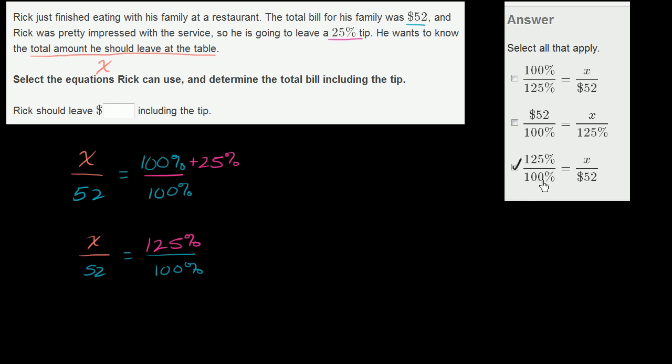And once again, this makes sense. The ratio between what he's going to pay with the tip to 100%, or the percentage that he's going to pay if you include the tip, relative to 100%, is going to be the actual amount he pays relative to the actual bill.